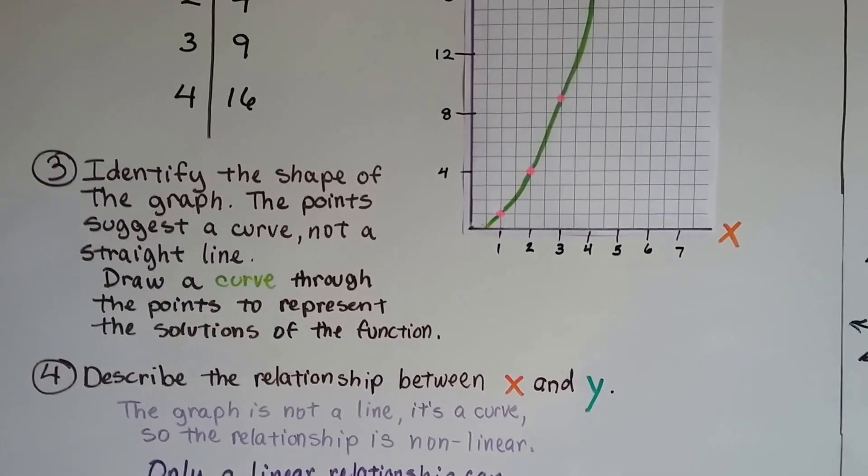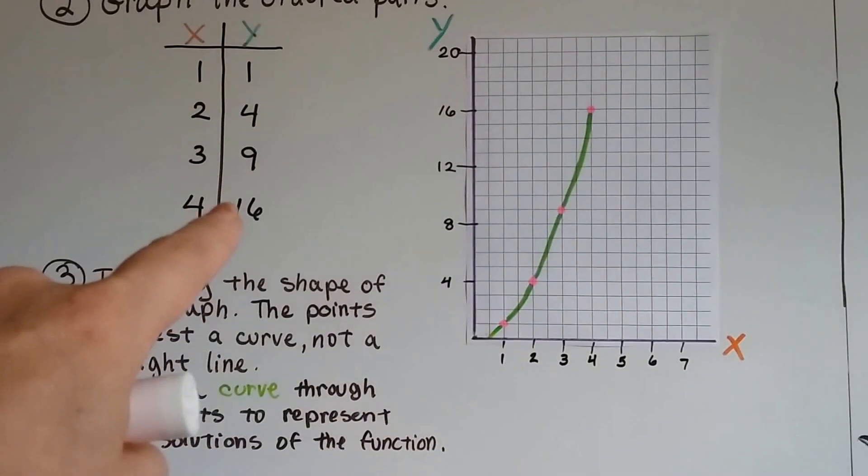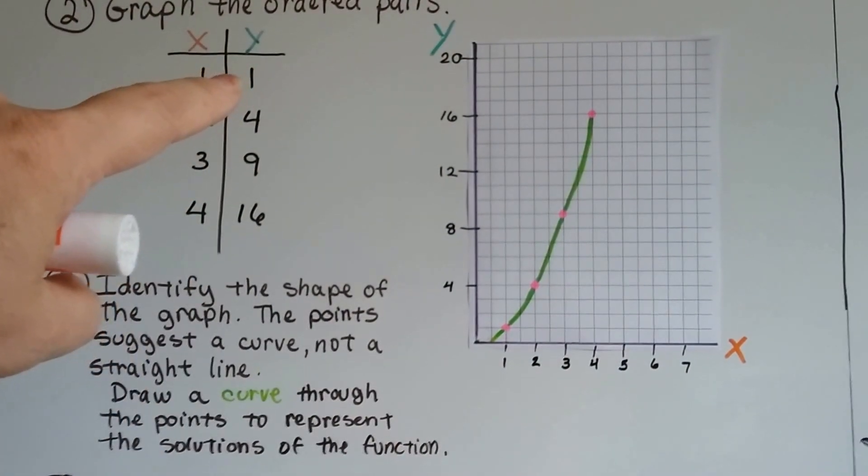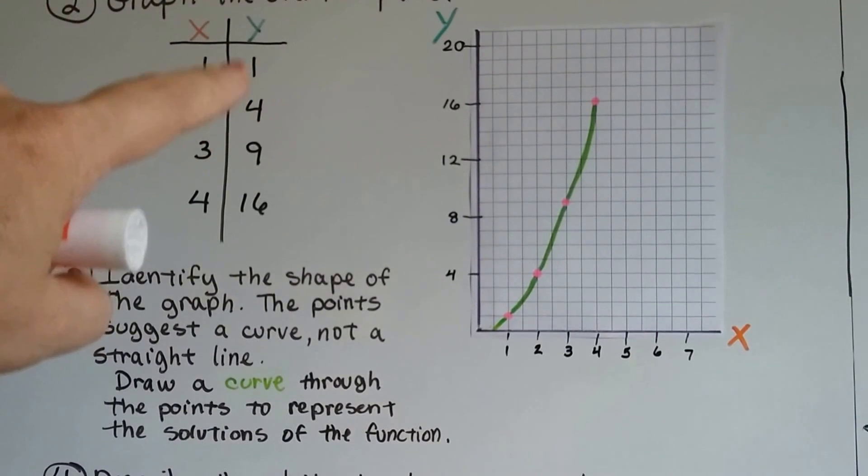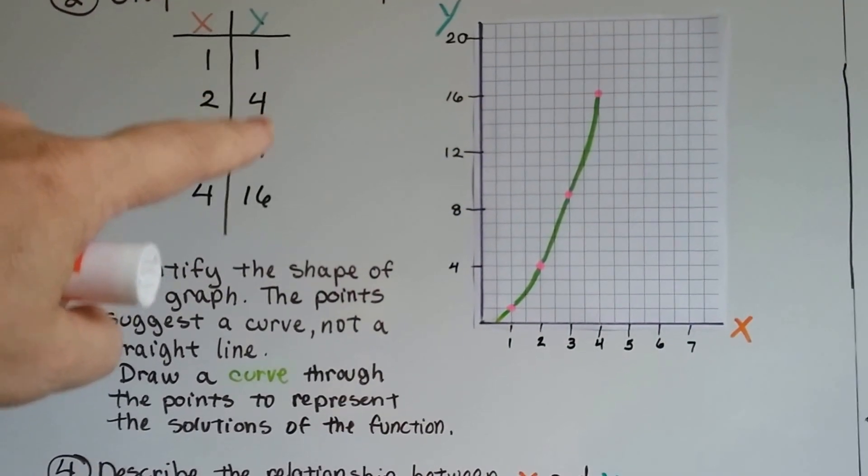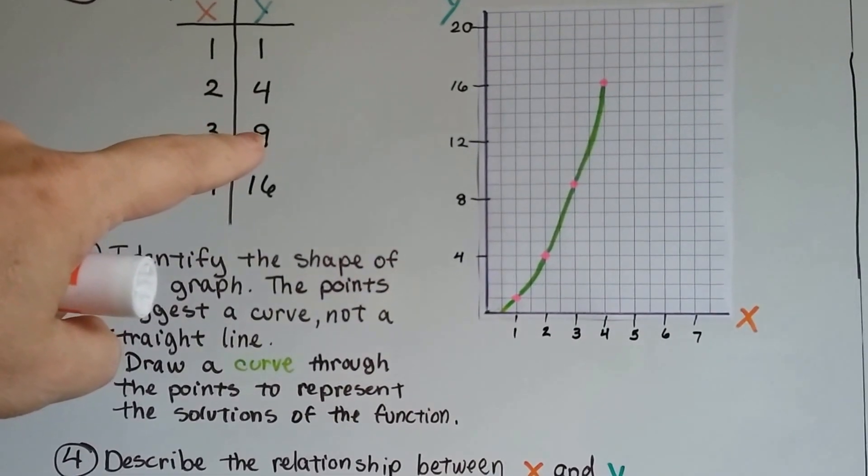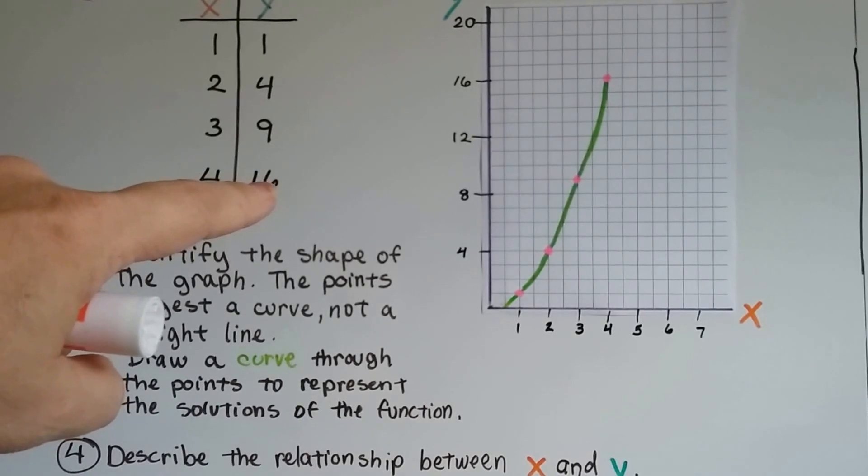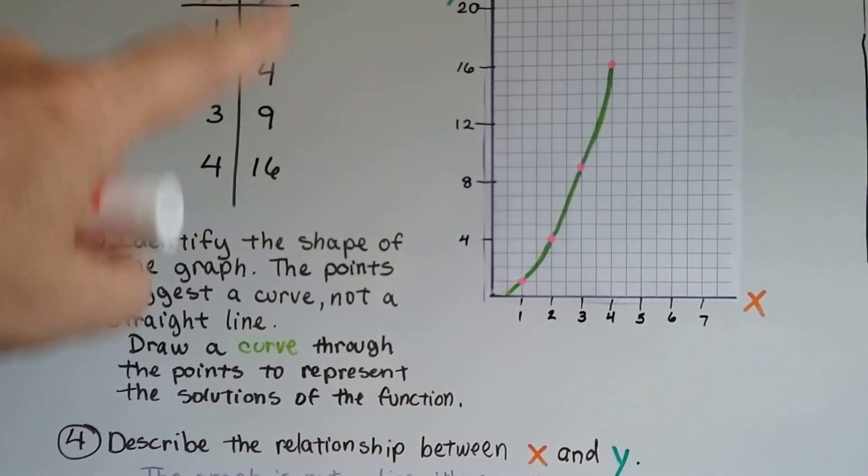The slope isn't the same, is it? We can see that in the table. The y went from one to four. That's plus three. Then it went up to nine. That's plus five. Then it went up to sixteen. That's plus seven. That slope's not the same, is it?